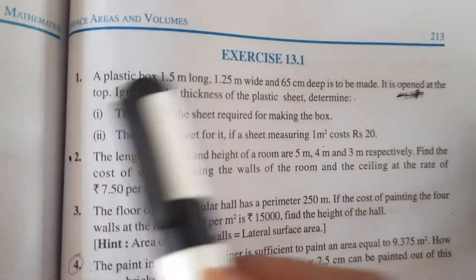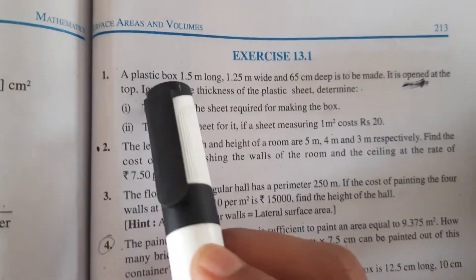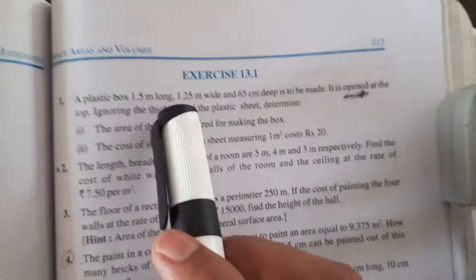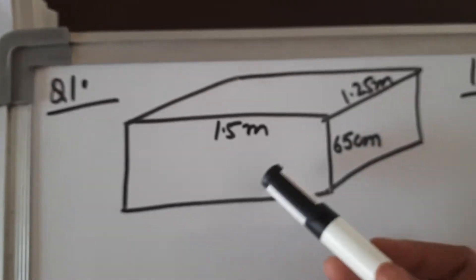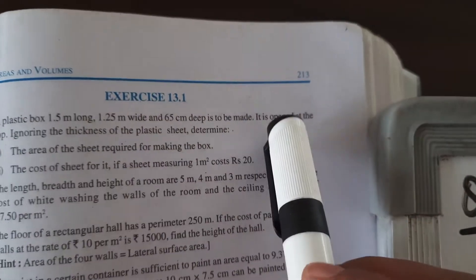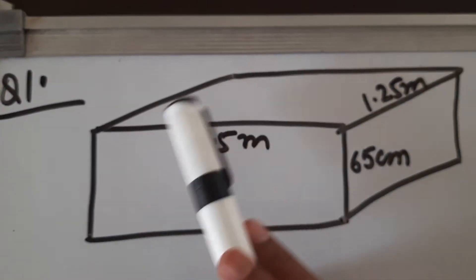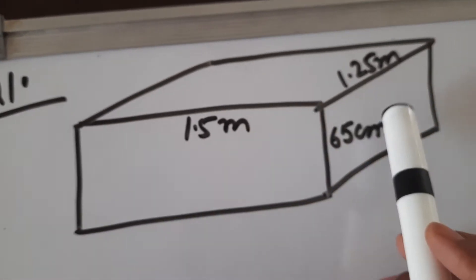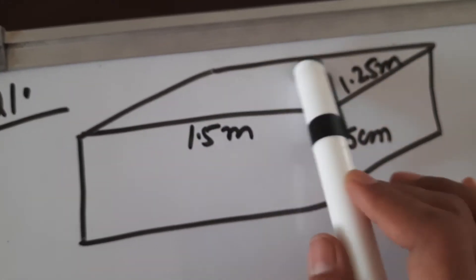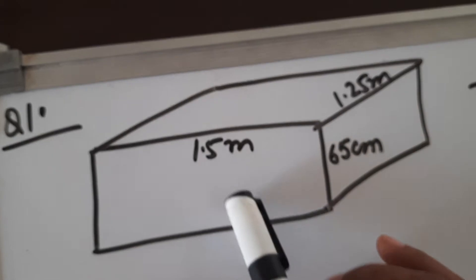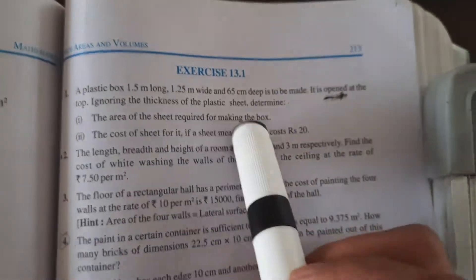Question 13.1, first question: a plastic box 1.5 meter long, 1.25 meter wide and 65 centimeter deep is to be made. This box is opened at the top, meaning it contains five walls — four surrounding walls and the base — but not the top part. Ignoring the thickness of the plastic sheet, determine the area of the sheet required for making the box.